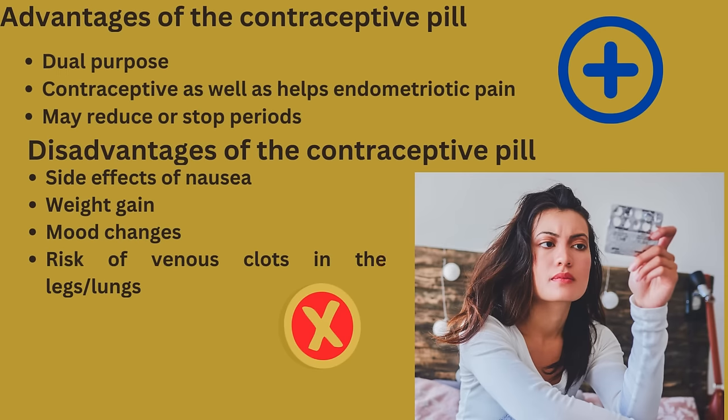Advantages of the contraceptive pill: it serves a dual purpose — contraception as well as helping endometriotic pain — and it may reduce or stop periods. Disadvantages of the contraceptive pill: side effects can include nausea, weight gain, mood changes, and the risk of venous clots in the legs or lungs.